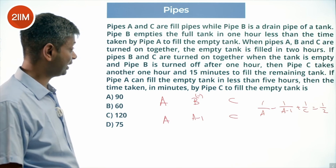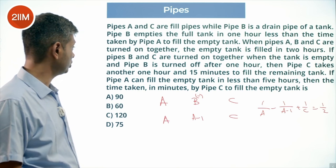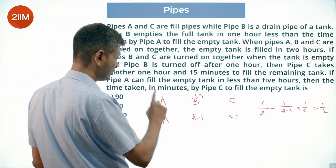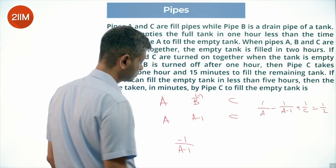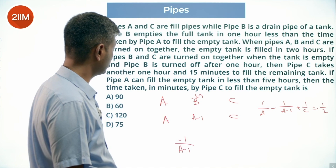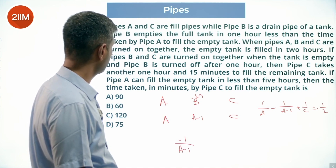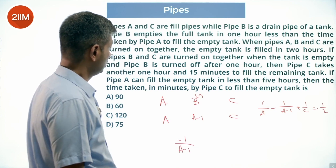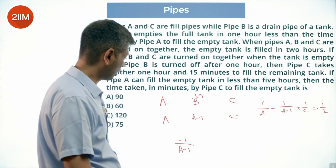If pipes B and C are turned on together when the tank is empty, and pipe B is turned off after 1 hour, then pipe C takes another 1 hour 15 minutes to fill the remaining tank. So pipe B has been kept open for 1 hour and pipe C is kept open for a total of 2 hours and 15 minutes.